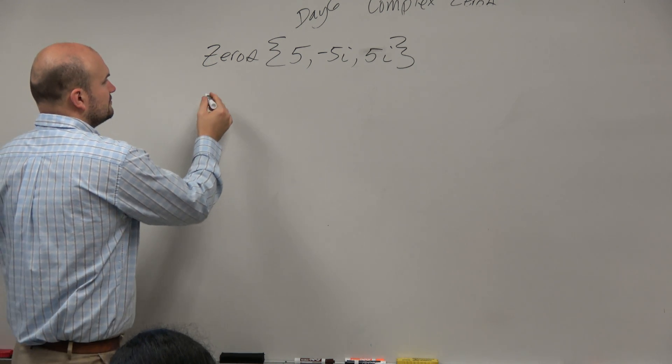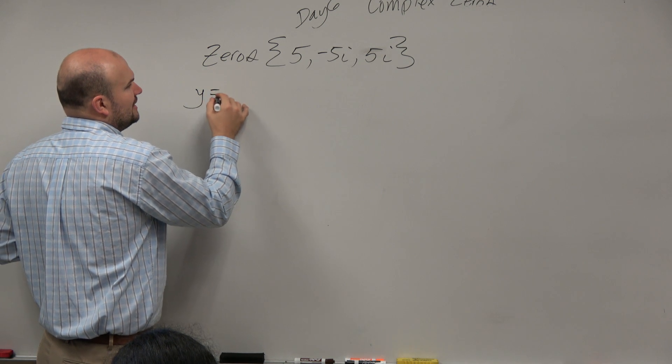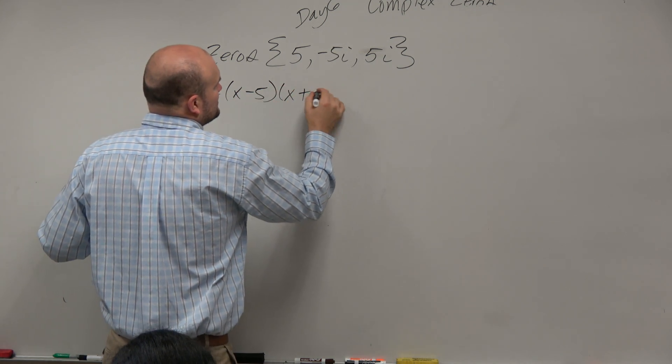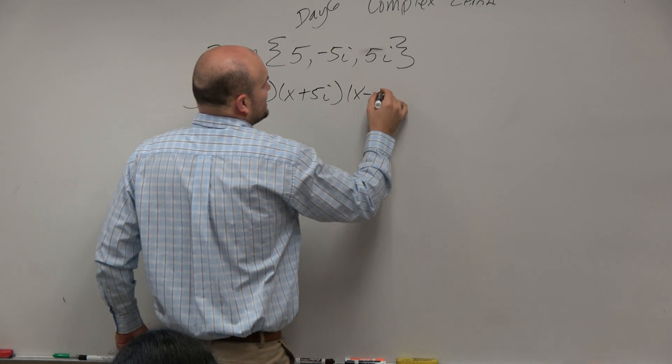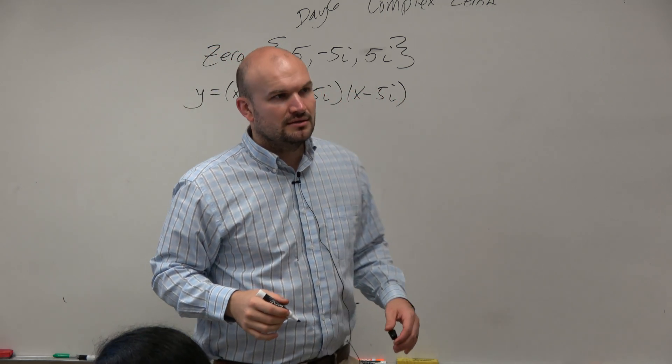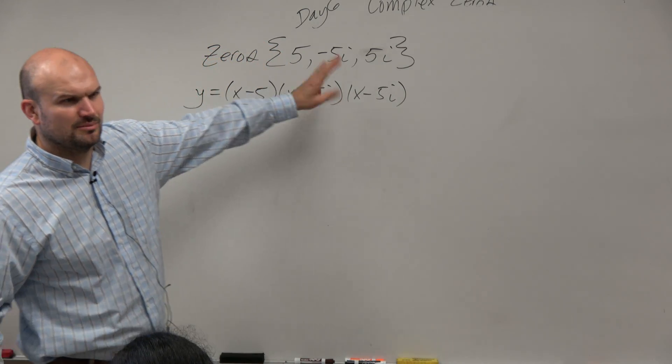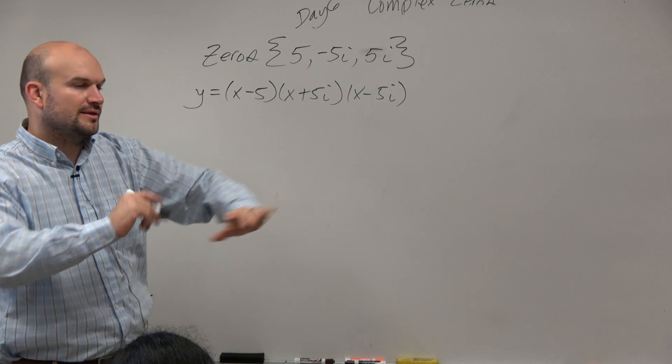So all I simply need to do is the linear factorization is going to be x minus 5 times x plus 5i times x minus 5i. Can you just do x plus or minus? You can do plus or minus, that's fine. A lot of times I'll write them as plus or minus, but for here I'm just separating them.